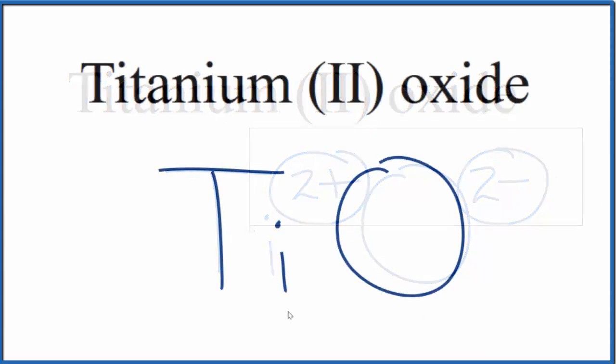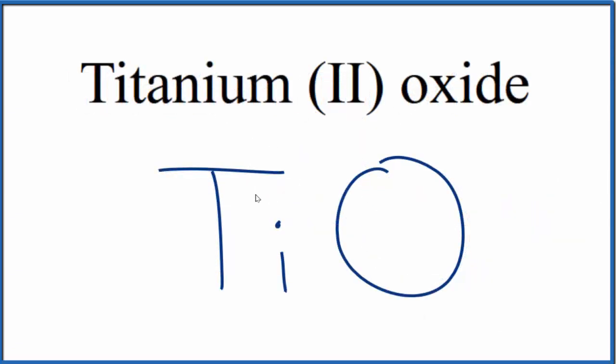So this is the formula for titanium (II) oxide, TiO. If you were given this formula, TiO, and asked to write the name, you know that oxygen is 2 minus, so this titanium has to be 2 plus. That's why we write the Roman numeral II here in the name.